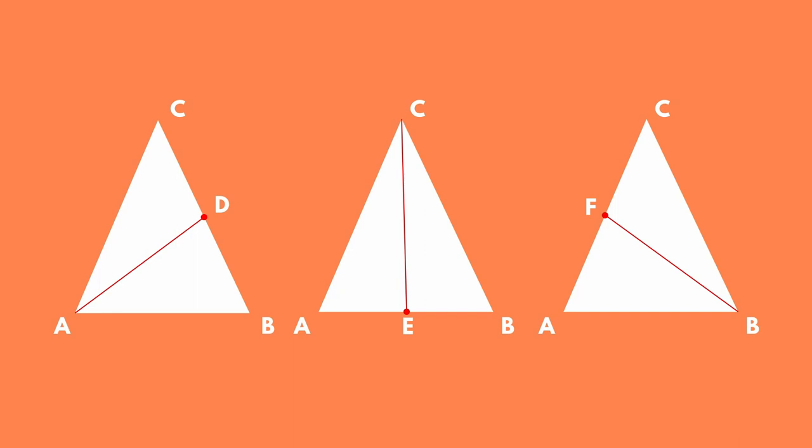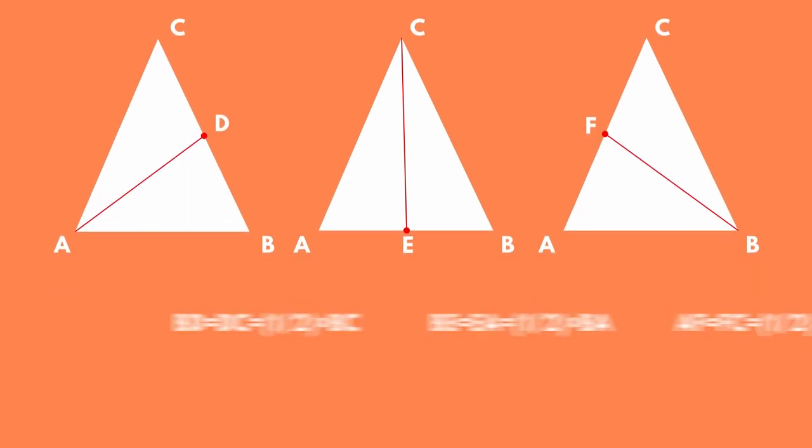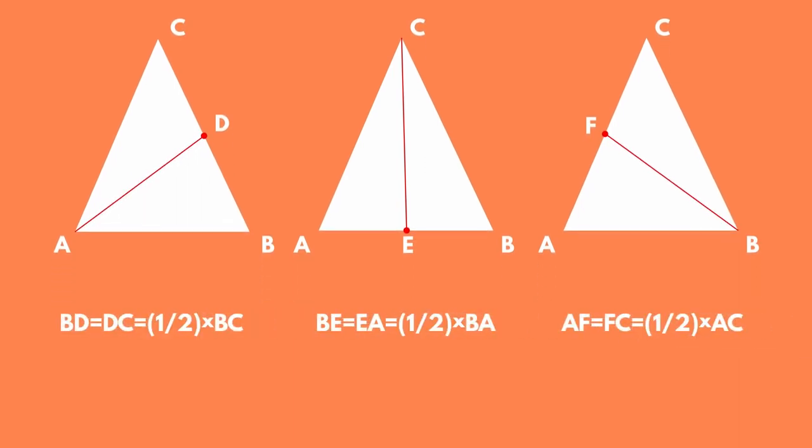Since every new point D, E, F is the midpoint, we've each time made two equal line segments of an original segment, side of the triangle ABC. Each time we have two triangles, but are they equal, or is there going to be a fight for the bigger slice?